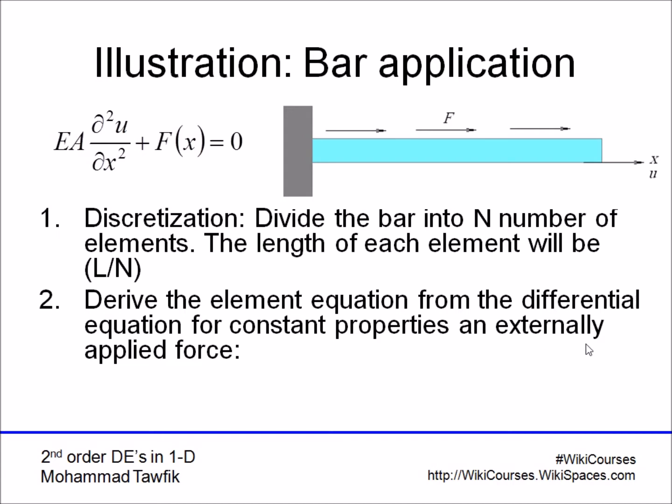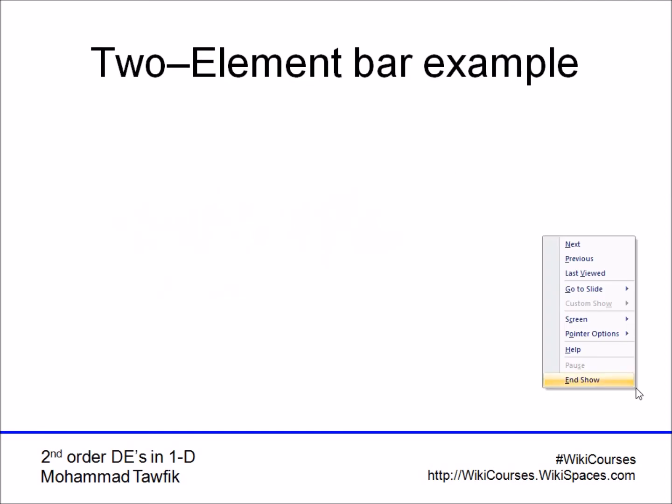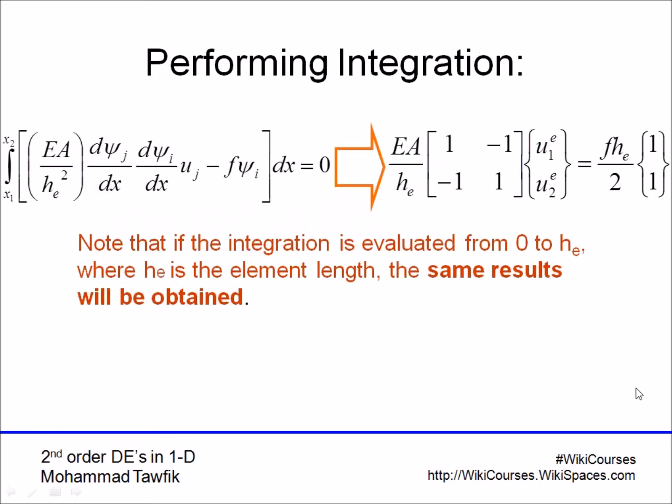Then derive the element equation from the differential equation for constant properties and externally applied force. This is the same that we got with the thermal problem or the previous illustration. If we perform the integrals, we're going to get the matrix. As you can notice, it's similar to the first matrix we got in the previous example, but the constant is different. Here, instead of a small a, we have the modulus of elasticity times the cross-sectional area. This is the element equation for a bar problem as illustrated here.